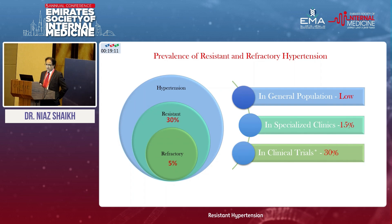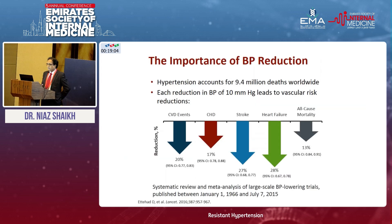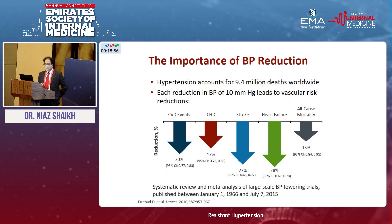In clinical trials, control was more difficult and incidence was much higher. We all know the importance of blood pressure reduction — even a reduction of 10 millimeters of mercury is associated with a 20 percent decrease in cardiovascular events and a 17 percent decrease in coronary disease. Similarly, there is around 27 to 28 percent reduction in stroke, heart failure, and all-cause mortality.